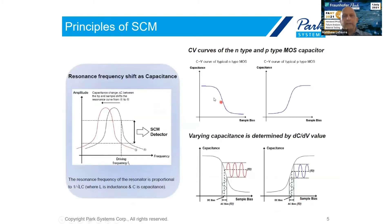If we look at CV curves for a typical MOS capacitor, on the left is an NMOS and on the right is a PMOS. They're basically the same for a given doping concentration — they're just reversed from each other with a phase change of 180 degrees.